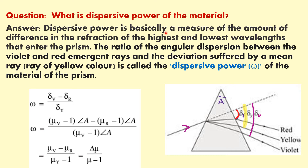What is dispersive power of the material? Dispersive power is a measure of the amount of difference in the refraction of the highest and lowest wavelength that enters the prism — the ratio of angular dispersion between the violet and red emergent rays and the deviation suffered by the mean ray. The yellow color is taken as the mean ray. This is expressed as omega equals delta V minus delta R divided by delta Y.